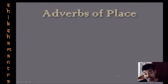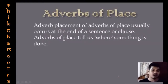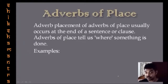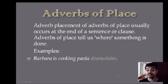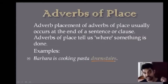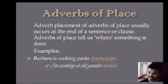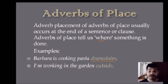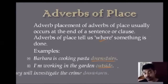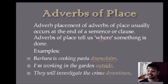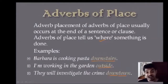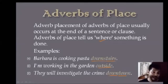Adverbs of place usually occur at the end of a sentence or clause and tell us where something is done. Examples: 'Barbara is cooking pasta downstairs' — where? Downstairs. 'I am walking in the garden outside' — where? Outside. 'They will investigate the crime downtown' — where? Downtown. All are adverbs of place placed at the far end of the sentence.